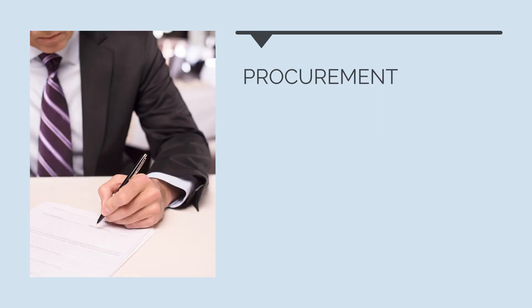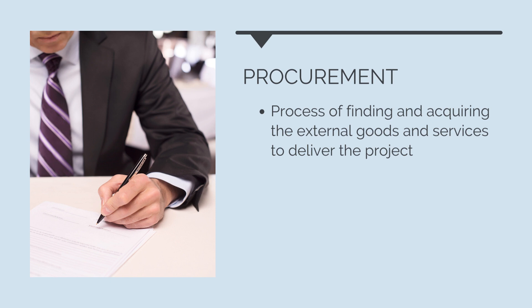Procurement is closely related to contract management. Procurement is the process of finding and acquiring the external goods and services needed to deliver a project. For us, the general contractor, this means finding and signing subcontract agreements with all of the subcontractors and suppliers we need to complete the project scope.